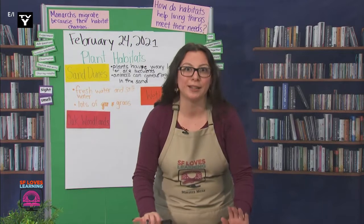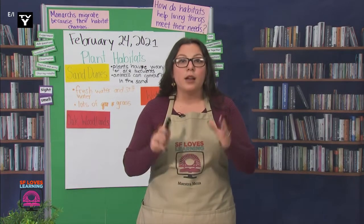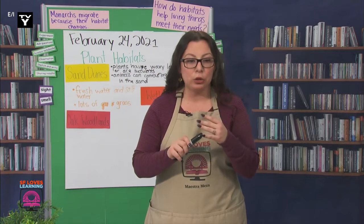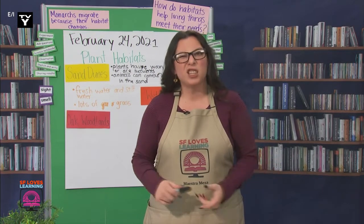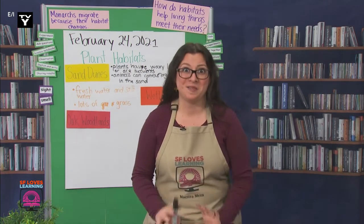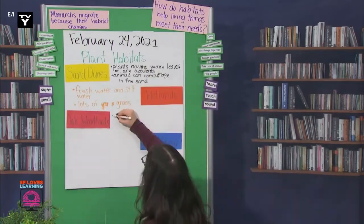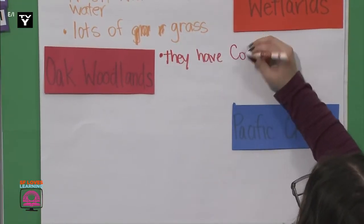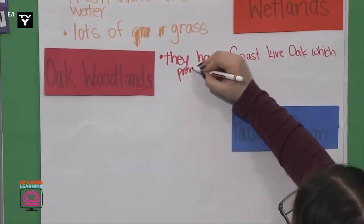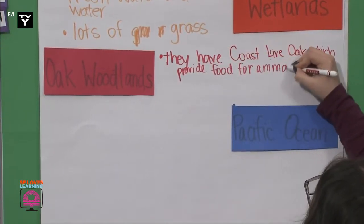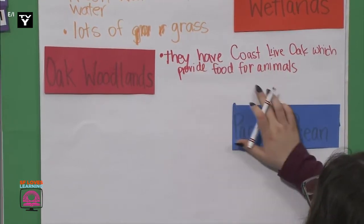We should actually stop to write that note. They have Coast Live Oaks, which makes food for animals. What do you think of that sentence? I'm glad you like it. Let's copy it down. They have Coast Live Oak, which provides food for animals.